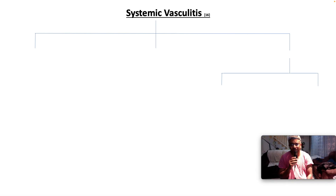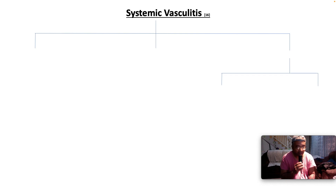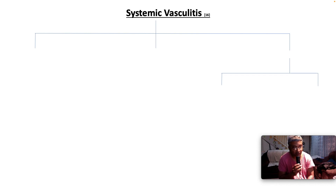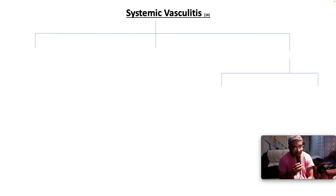Vasculitis — what is vasculitis? It describes a heterogeneous group of disorders or diseases that share the common definitive feature of blood vessel inflammation. Systemic vasculitis refers to a group of named primary vasculitides that are immune-mediated and individually distinguished by the presence of unique clinical pathological features.